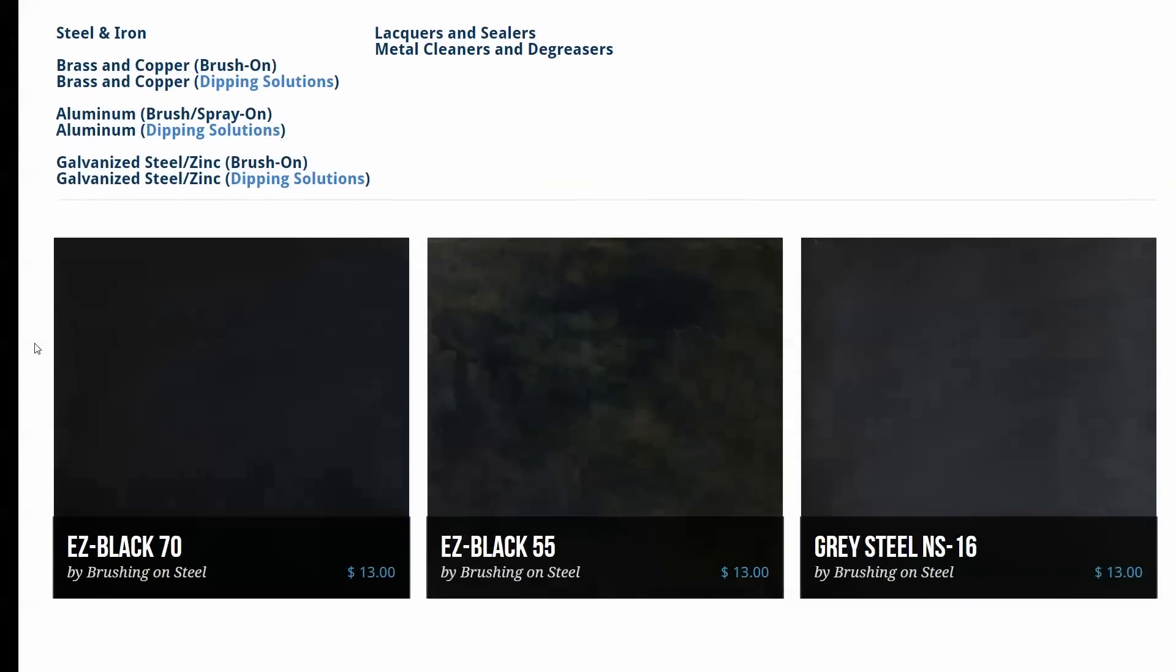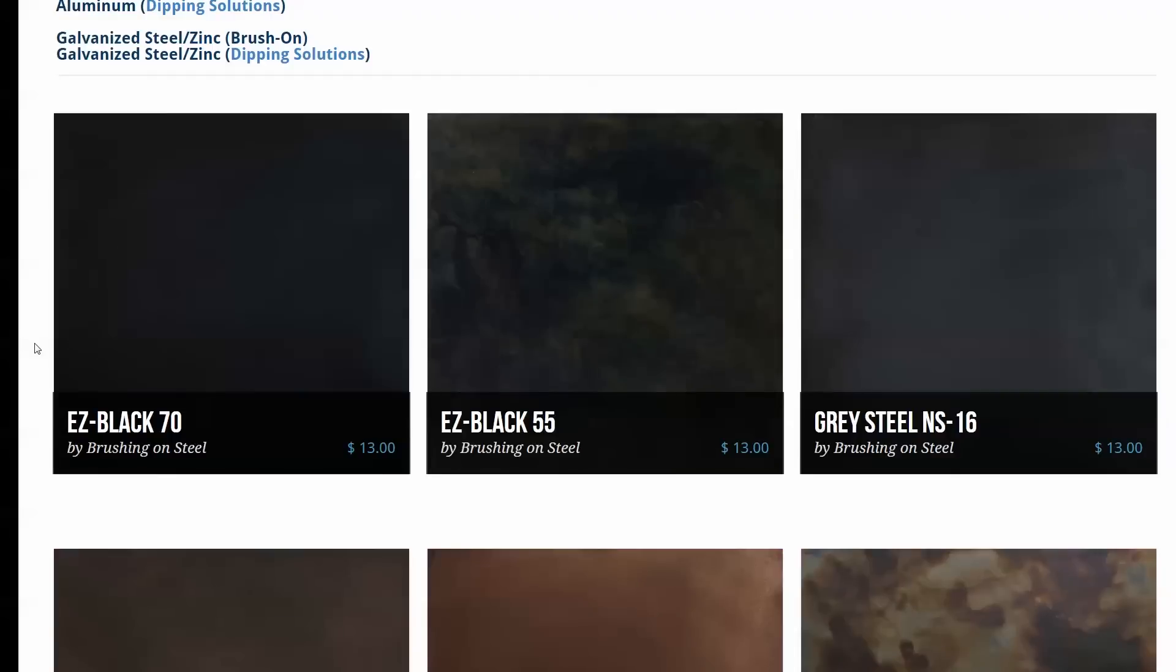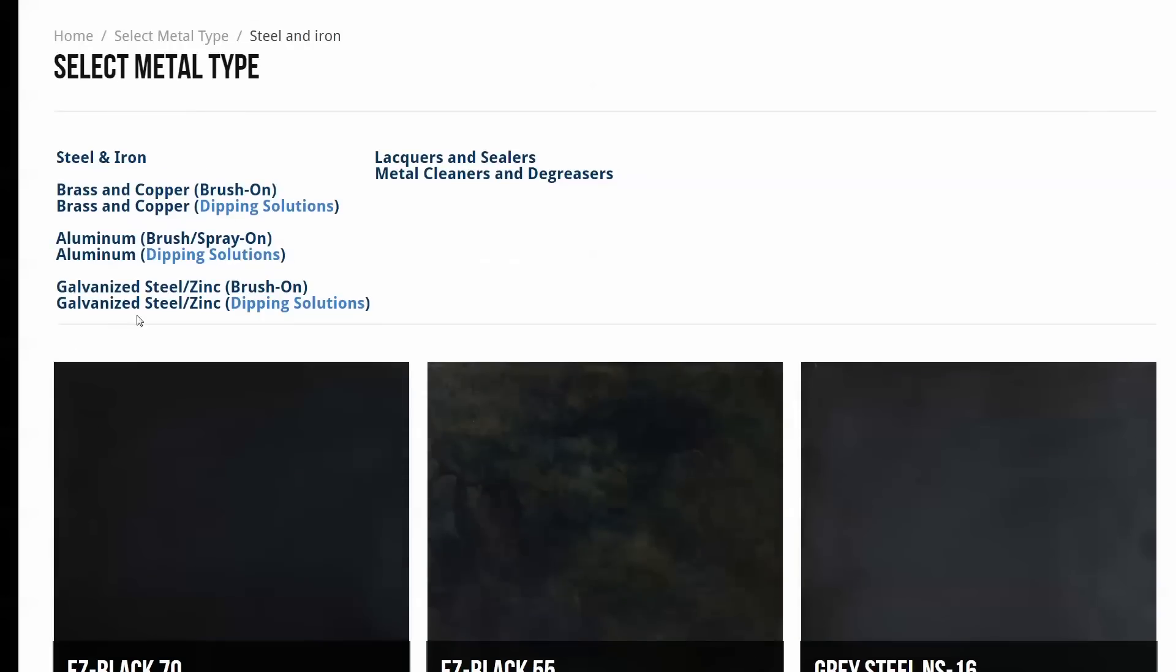Today we're going to do the EasyBlack 70 patina for steel and iron. This patina gives you an instant black oxide or darkened look on steel.